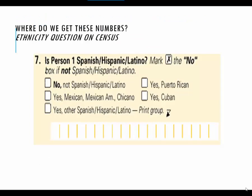Where do we get these numbers? This is how the race and ethnicity questions looked on the 2010 census. They would talk to the head of householder and gather this information for each person in the household. First they ask: is the person Spanish, Hispanic, or Latino? If you mark no, you go to the next question. If you say yes, there are three groups that are pulled out: Puerto Rican; Mexican, Mexican American, Chicano; and Cuban. If you are not one of those groups, you can indicate your other group.